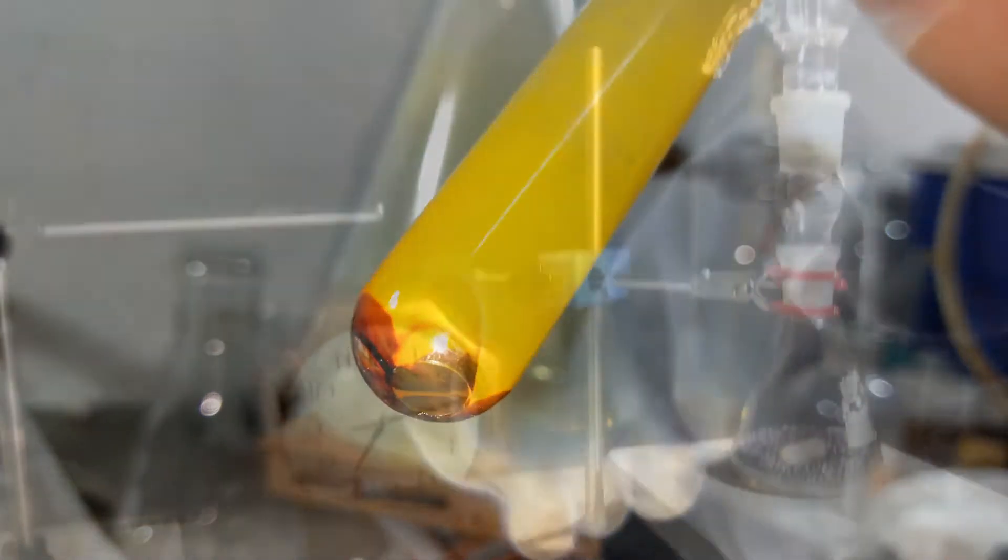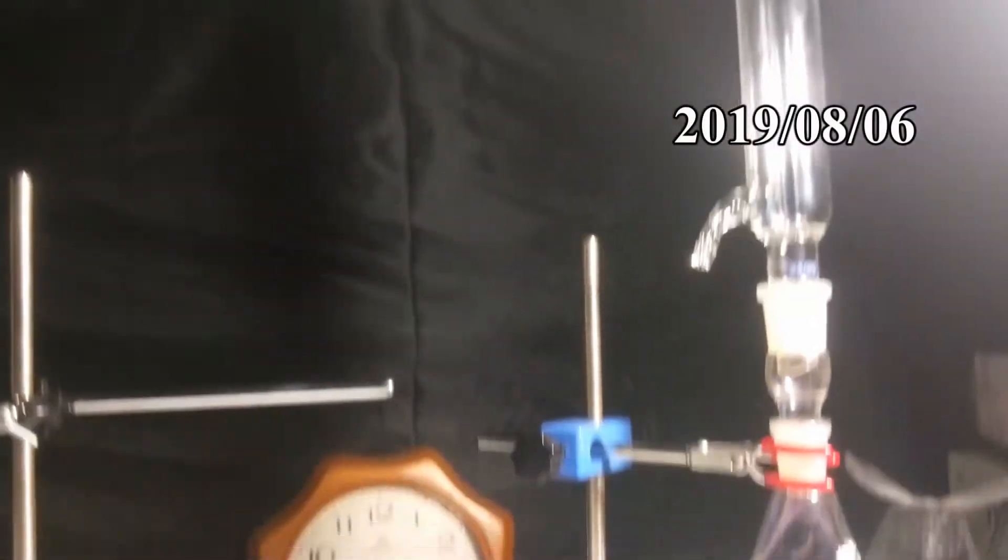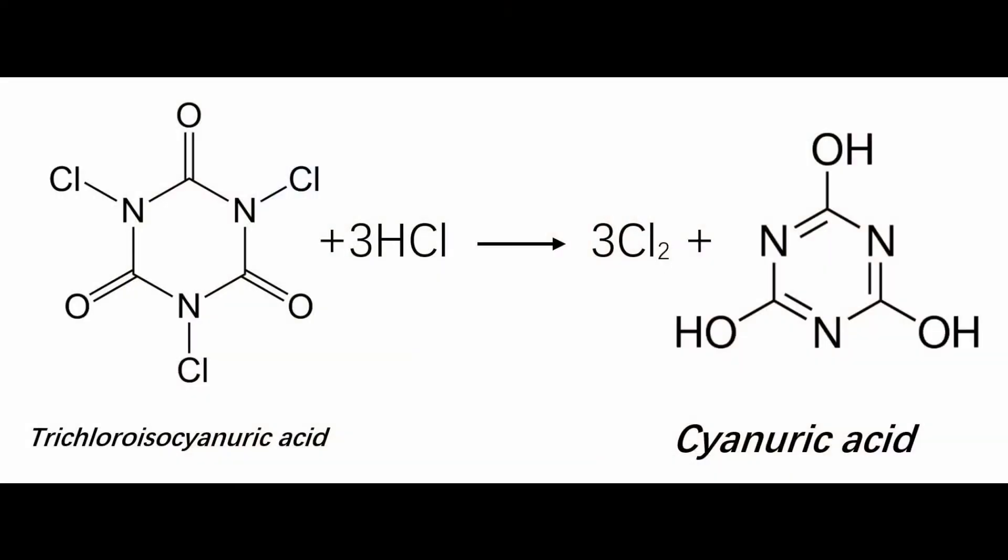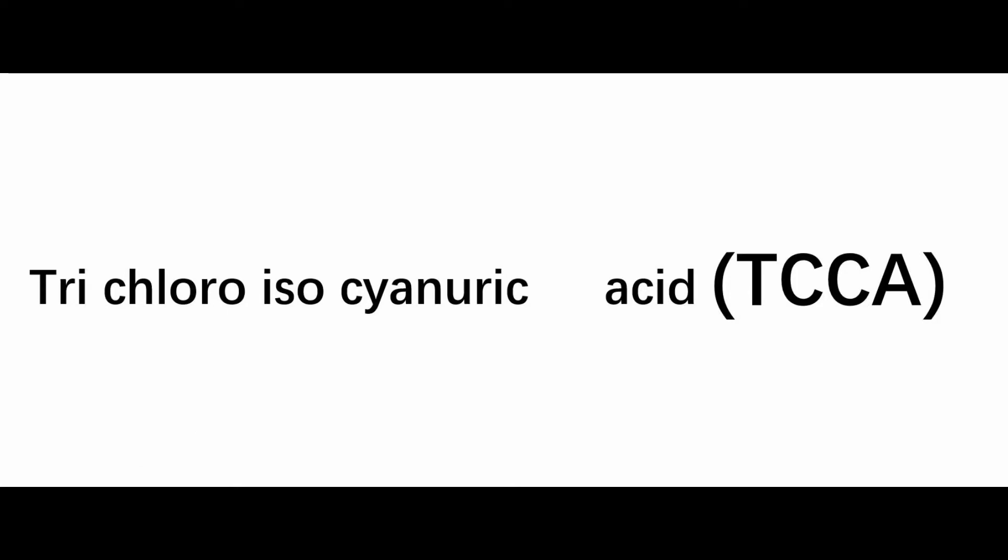Well, then let's scale it up. The ingredients are simple. Iodine, chlorine, which can be generated by using the reaction between hydrochloric acid and trichloro-isocyanuric acid, a.k.a. TCCA.